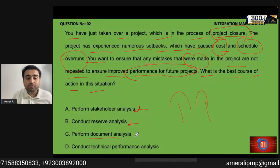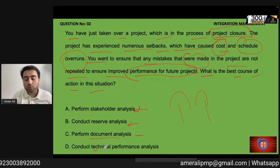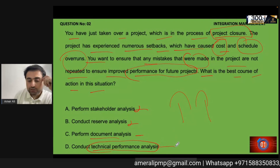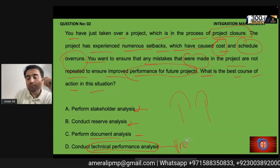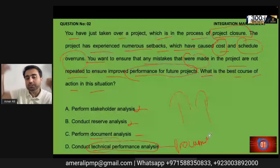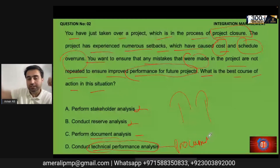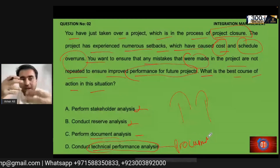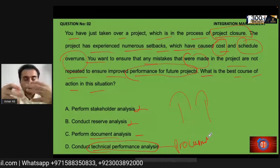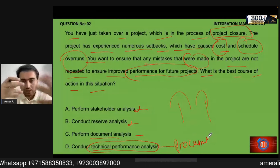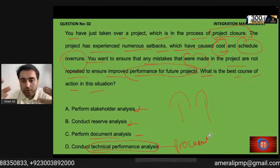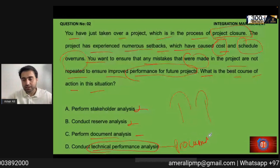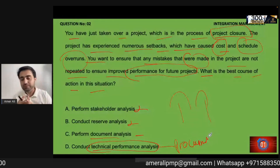Technical performance analysis is a tool used in procurement to see how much work has been done. Document analysis is the tool we use when looking at lessons learned — we look at all reports and documents to improve future projects. That is how we write lessons learned and daily reports. Document analysis is the correct answer.